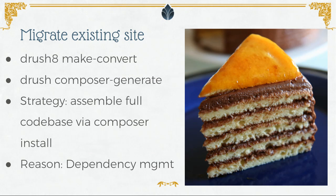If you already have a Drupal 8 site and want to use Drush 9, your best bet is to make it a Composer-built project — that's really what Drush expects. There are two projects that help you convert. Make-convert is a command in Drush 8 that takes your Drush make file and emits equivalent composer.json. And drush composer-generate is a contrib project that takes a bare Drupal website, looks at the modules and projects you're using, and creates a composer.json for you.